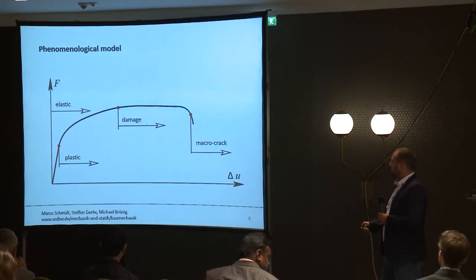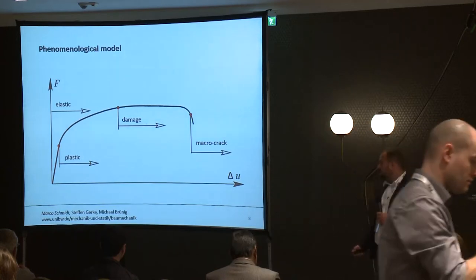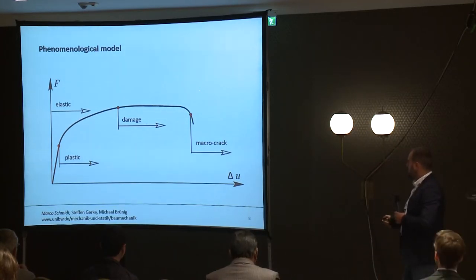In a similar way, when a damage condition is reached, an elastic-plastic damage behavior occurs, where a damage rule describes the damage behavior. Furthermore, when a critical damage is reached, macro cracking occurs.